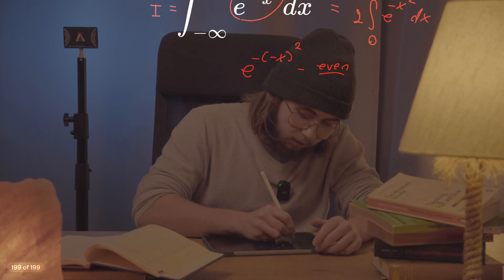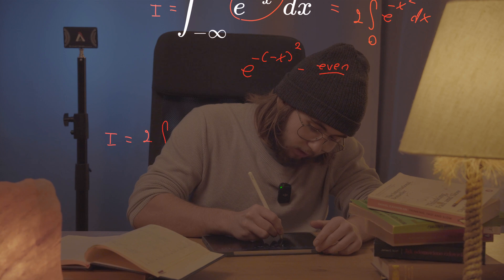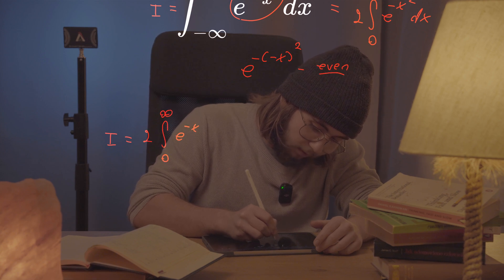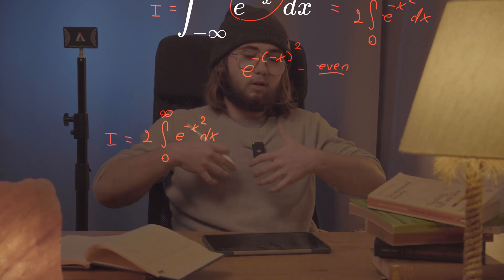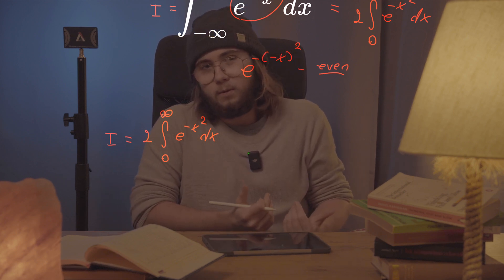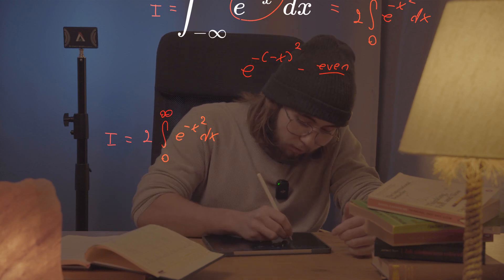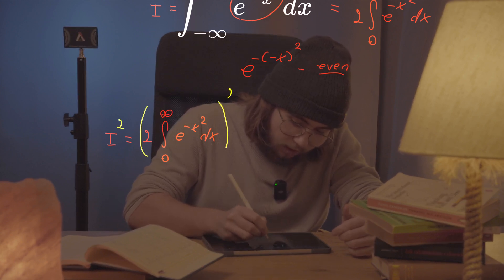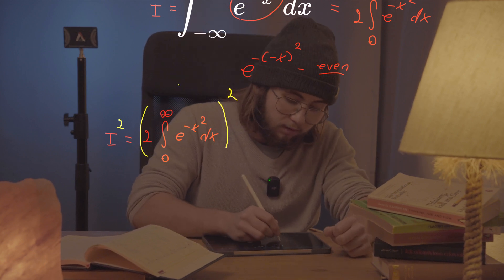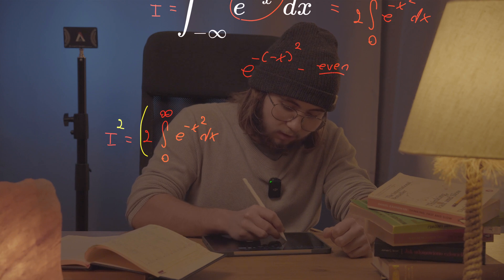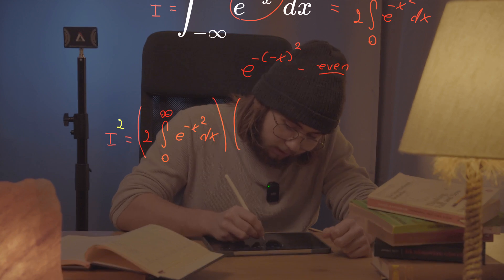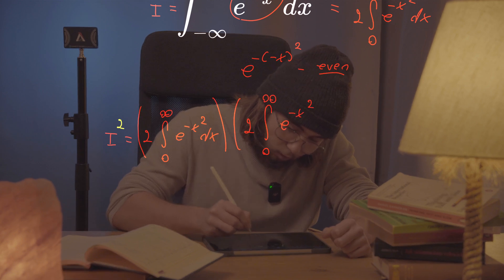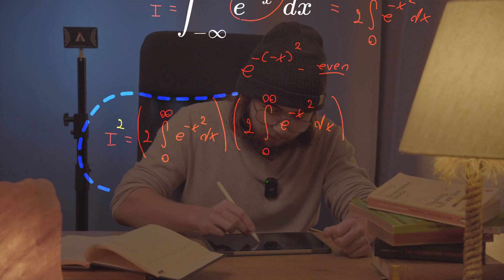So I equals double the integral from zero to infinity of e to the negative x squared dx. Now I'd like to introduce a trick: I want to square both sides of this equality. I'll interpret squaring this integral as taking this integral and multiplying it by the same integral once more — another integral of e to the negative x squared dx.